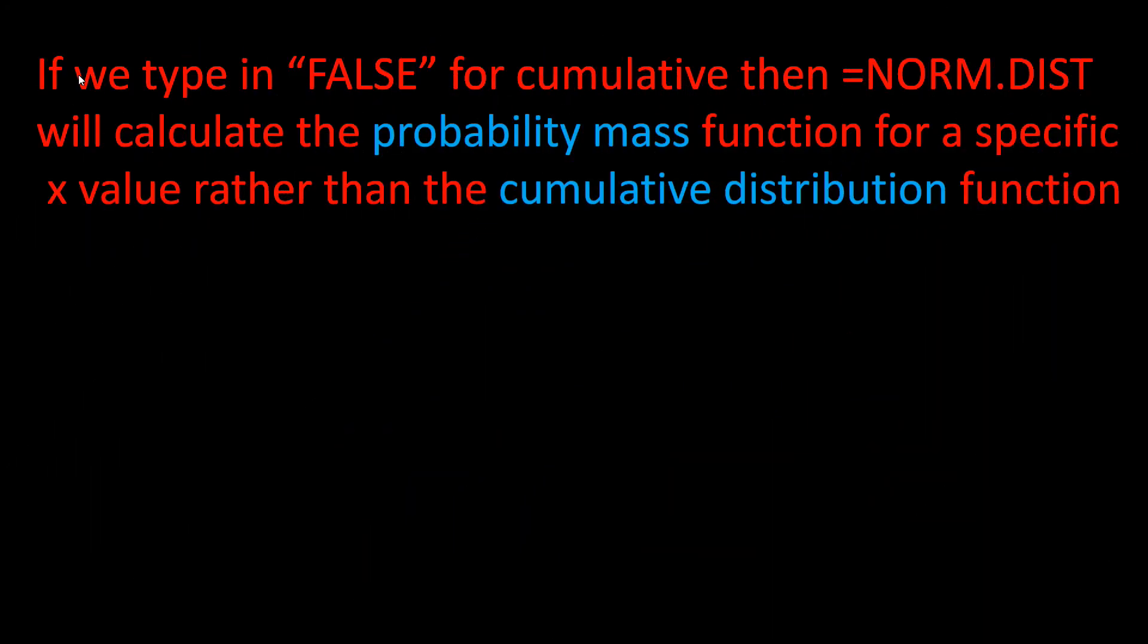If we type in FALSE for cumulative instead of TRUE, then Excel will calculate the probability mass function for a specific x value, rather than the cumulative distribution function. So for this example, if we want to know the probability that a student will get exactly 83, or the probability that x is equal to 83, not less than or equal to but equal to only, then we would type in FALSE. Let's see how this is done in Excel.